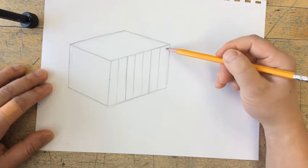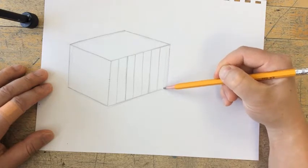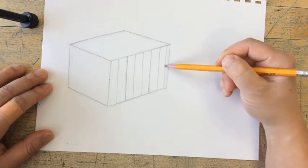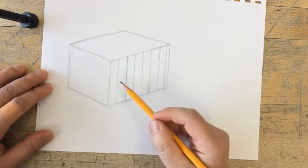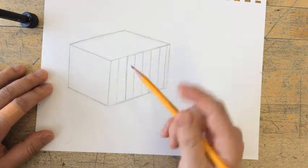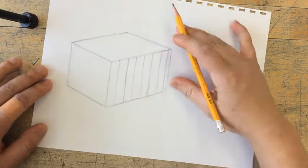So my vertical lines on the side of my cube here are drawn in. I'll go back in, restate the lines that I want, and erase the ones that I don't need.